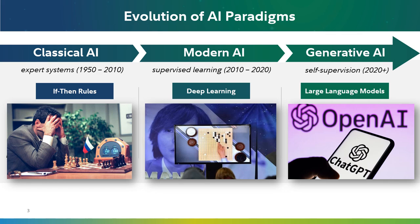What's the limitation? There are at least two main concerns with generative AI. Number one, the data that goes into training these large models remains opaque. And number two, the data that comes out remains unknown in terms of factuality.